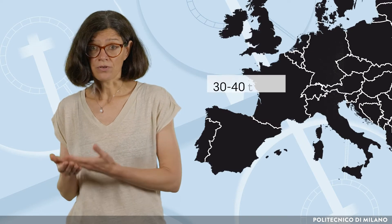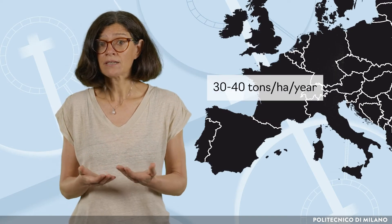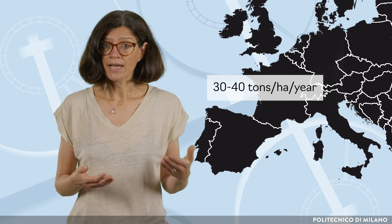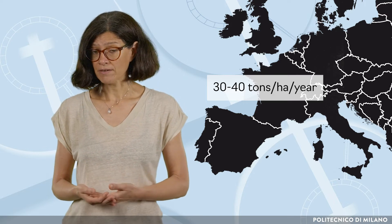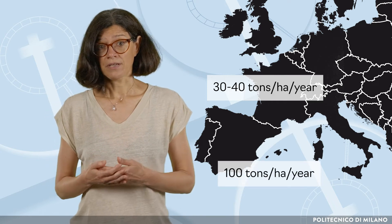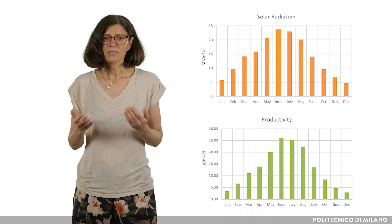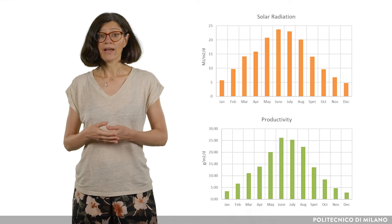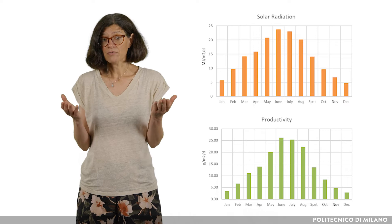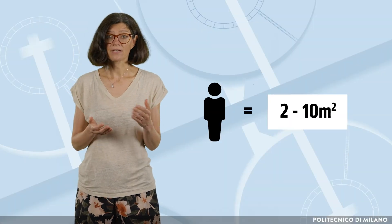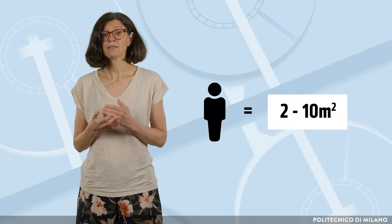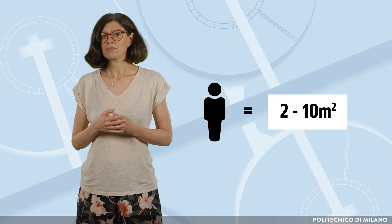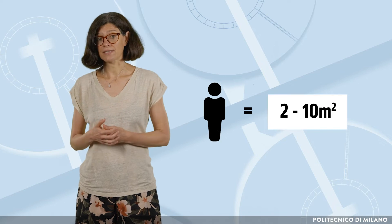Indeed, algal biomass productivity — and thus the oxygenation capacity and treatment capacity per unit of area — can vary between 30 and 40 tons per hectare per year in northern Italy, with a seasonal trend such as the one reported in the graph, to 100 tons per hectare per year in the south of Spain. Consequently, the required area varies within rather wide intervals, approximately between 2 and 10 square meters per inhabitant, which is at least one order of magnitude higher than the footprint of traditional systems.